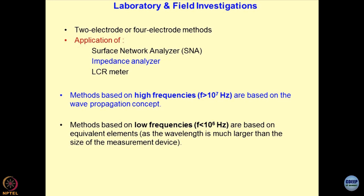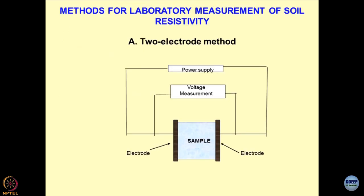We use the concept of wave propagation when dealing with the megahertz region of frequency, talking about the interference of waves. However, when dealing with low frequency which is less than a gigahertz range, we use the equivalent element method. For the two-electrode method, you take the sample of the geomaterial, sandwich it within the electrodes, and the electrodes are connected to the power supply. The power supply passes current to the sample and you measure the voltage across the sample.